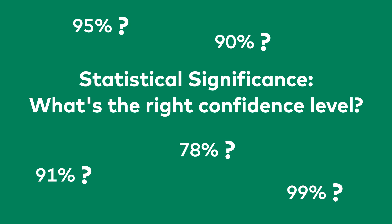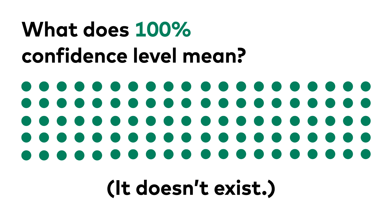But now that you know the real difference between these numbers, you can make up your own mind. And one last question: what does 100% confidence level mean? In A/B testing, it doesn't exist. Experimenting always contains some sort of uncertainty, and you can never be 100% certain that your results are true positives. But using the right level of statistical significance and the right confidence level targets, you can minimize this risk to be negligible.